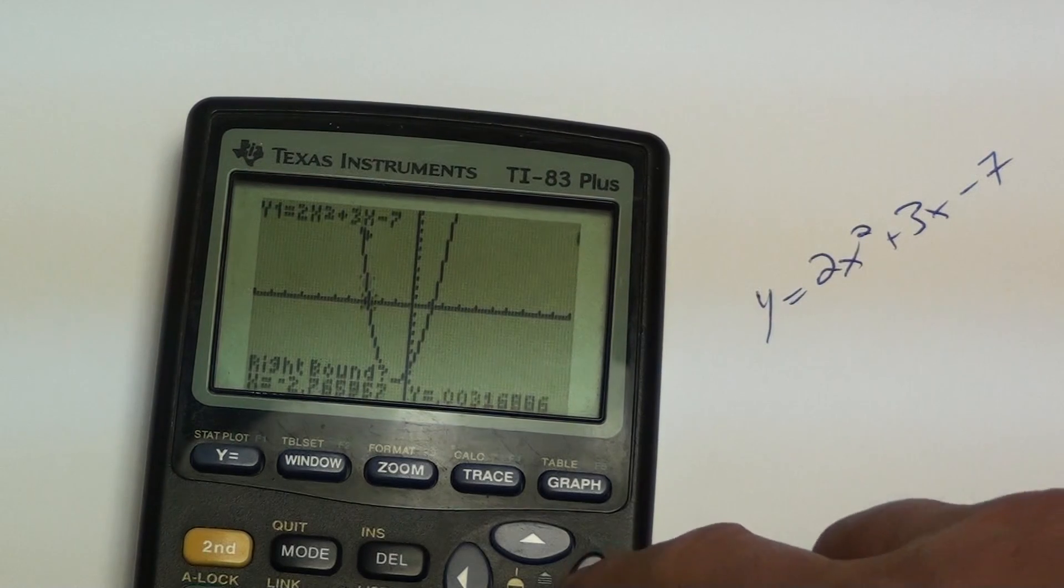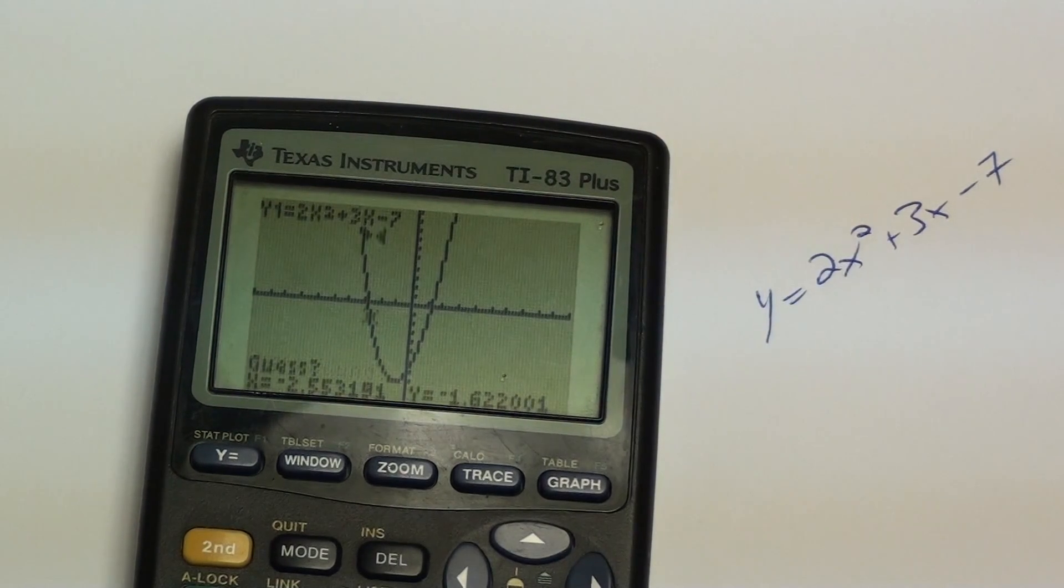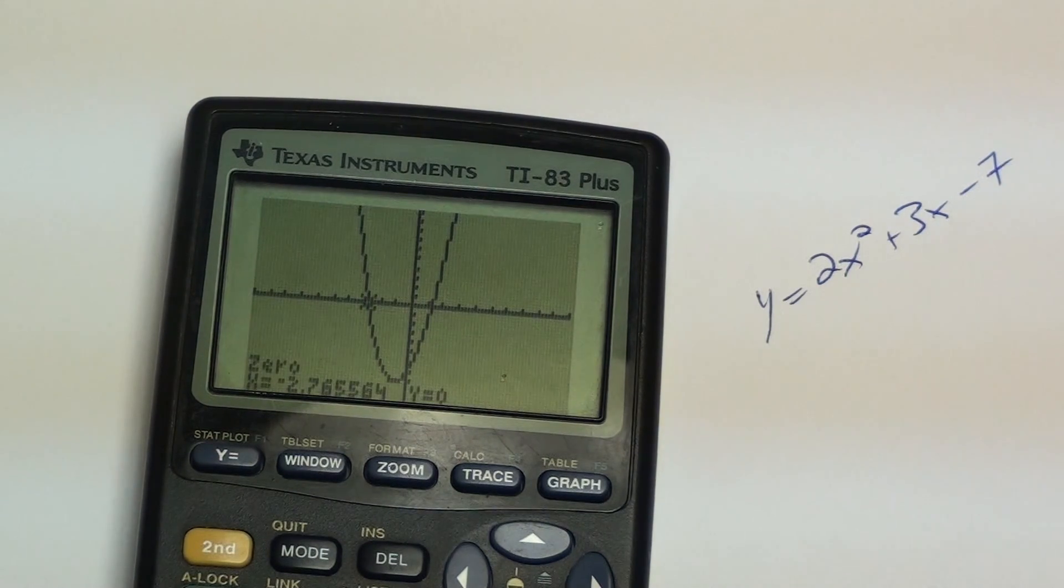It's asking right bound. So move back so you're on the other side. Hit enter again. Guess. Enter a third time. And it tells you the x-intercept. So that way, you had to find both x-intercepts. And you had to do the same steps twice.